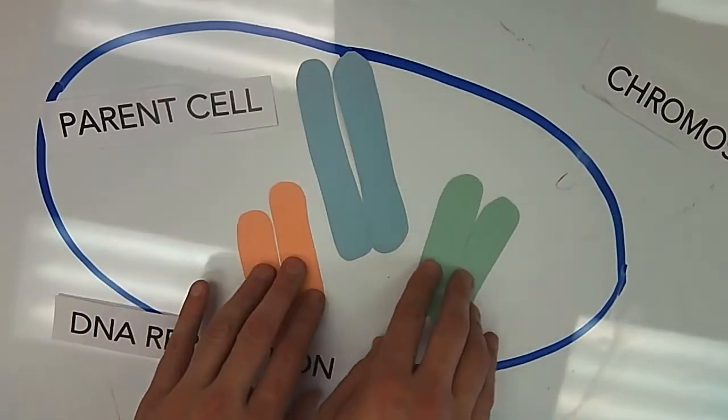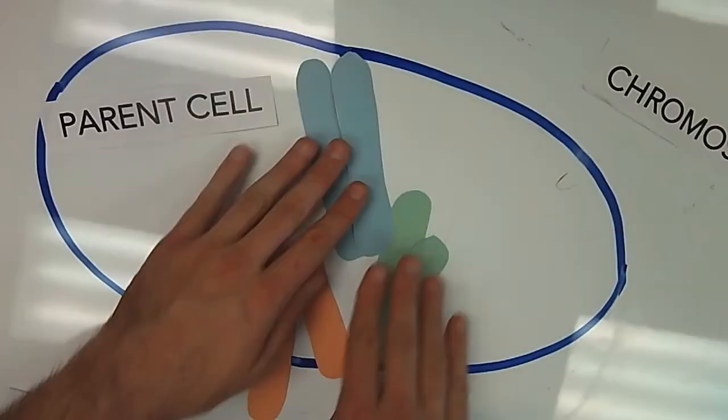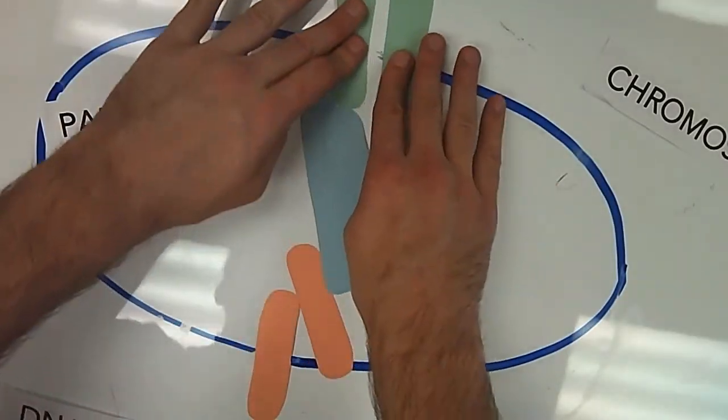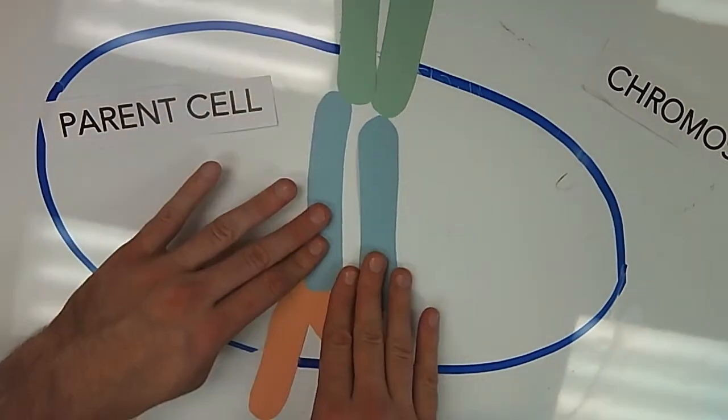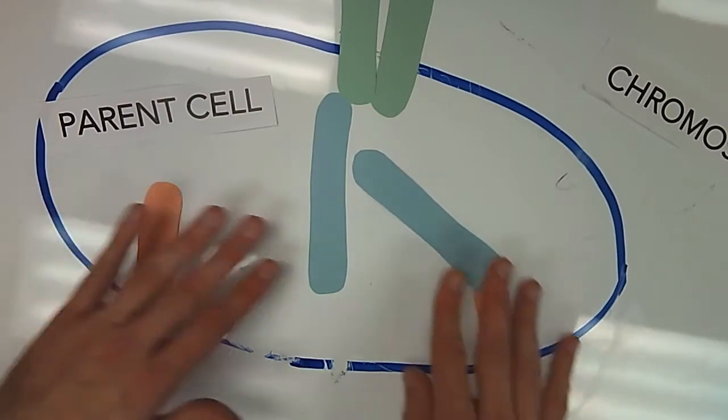And what will actually happen, and unfortunately I just don't have a lot of room here, is they'll actually line up, kind of like this. And obviously some are coming out of the cell, this would normally not happen. And then they're going to move to opposite ends of the cell.